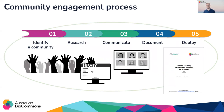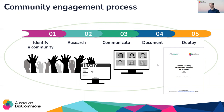The core of this is our formal community engagement process, which I'm going to walk you through. We initially identify a community, then research that community to find out more about it. We then communicate with the community through consultation meetings and community surveys. These consultations are then used to create a document that distils the requirements and challenges of the community into an infrastructure roadmap. Within this roadmap we will also propose potential solutions to the requirements and challenges, and then work closely with the community to deploy suitable solutions.